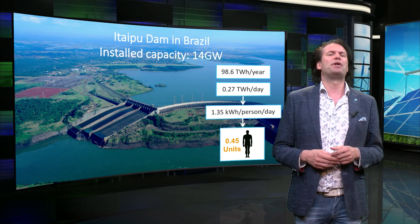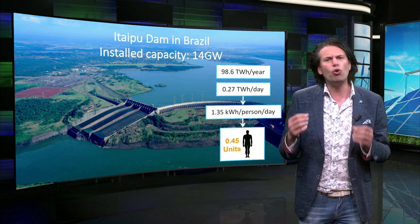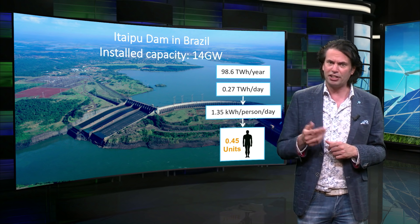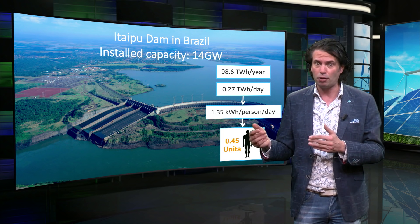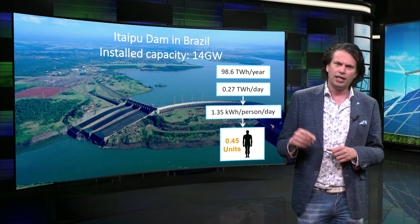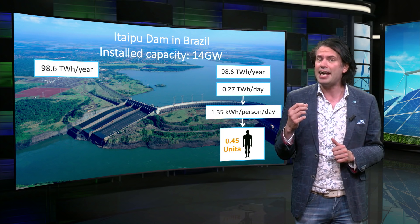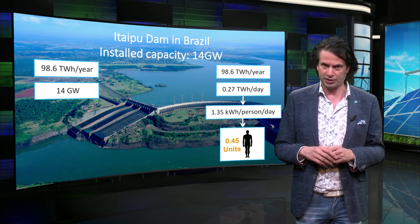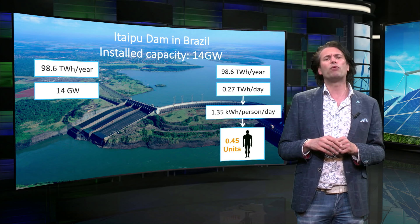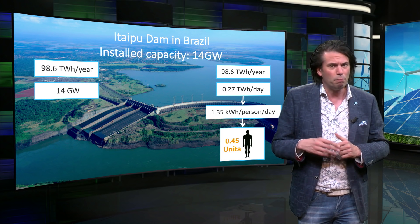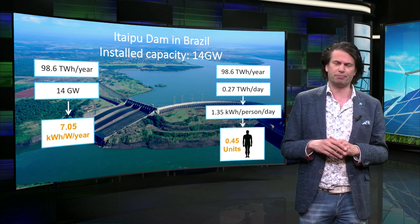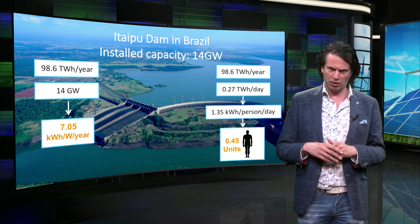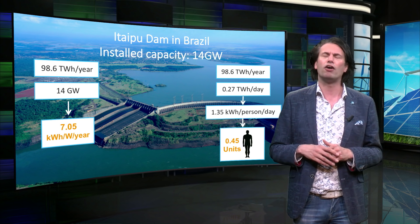Another way of comparing the yield of any renewable energy source is to look at the annual energy yield per rated power — in other words, how much kWh of energy is generated per year per watt of installed capacity. In this case, we divide 98.6 TWh by the 14 GW of installed capacity. For the Itaipu dam, we arrive at a little more than 7 kWh per watt per year. This value expressed in kWh per watt per year will also be used for other renewable technologies introduced this week for comparison.